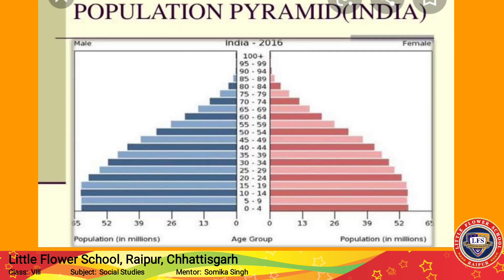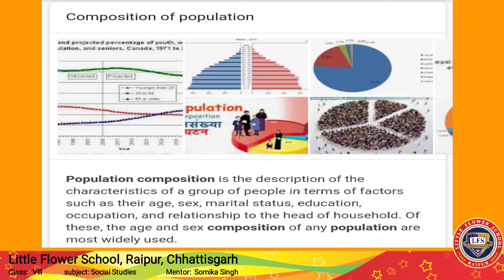Population pyramid: यहाँ पर diagram के through बताया जा रहा है कि किसमें कितना male और कितना female है। Age group के हिसाब से कितना male और कितना million (population in millions) है, यह pyramid के through पताया जा रहा है।